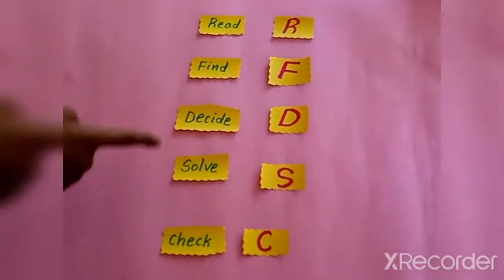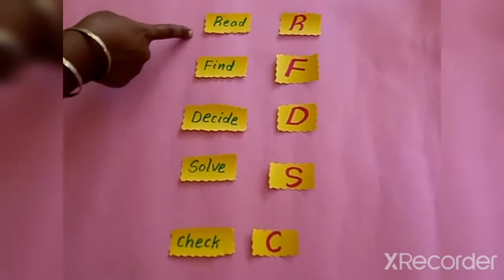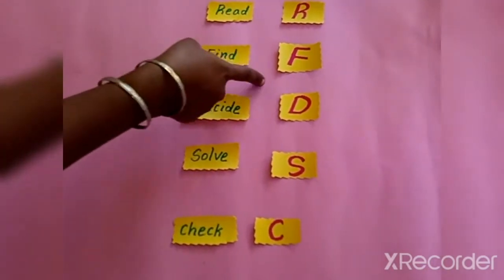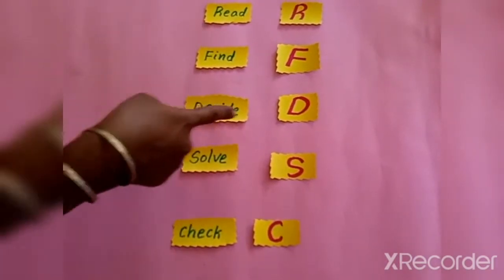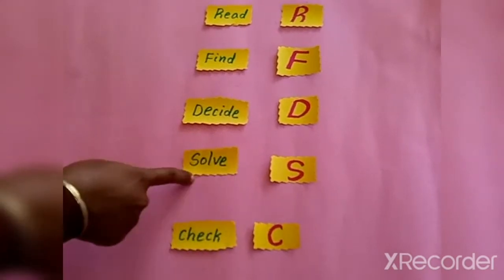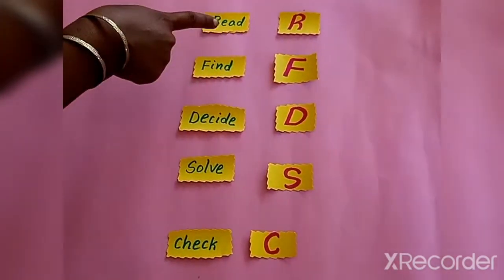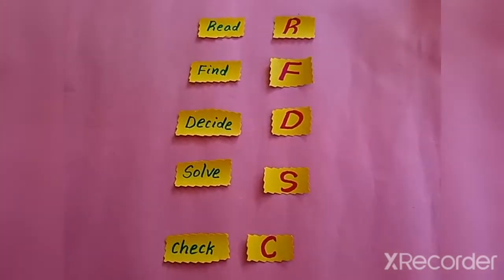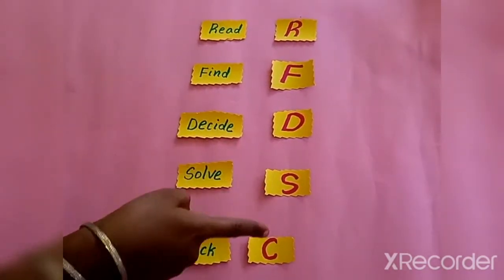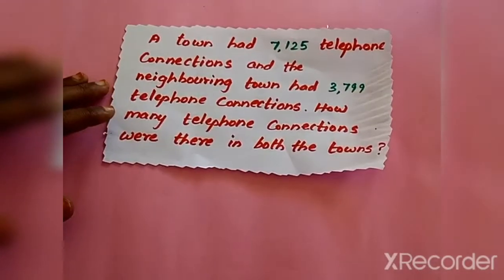The above five steps in short can be summarised as: R for Read, F for Find the information, D for Decide what to do, S for Solve, and C for Check. So we can just follow these steps — R, F, D, S, C — to solve a statement problem.